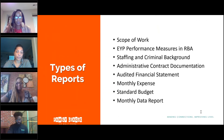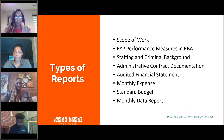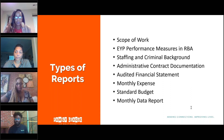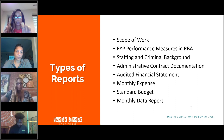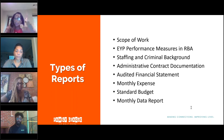Depending on the program you are operating under, you may see varying types of reports. This is a running list across programs of what you may see: scope of work, EYP performance measures and RBA, staffing and criminal background reports, administrative reports, audited financial statements, monthly expense reports, standard budgets, monthly data reports, and versions of those tailored to your specific program.